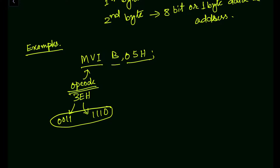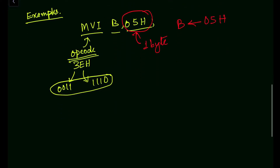The 'I' in MVI stands for immediate addressing mode — we will cover addressing modes in later videos. Whenever an instruction has 'I', it means the data is expressed directly in the instruction itself. Here, 05H is the immediate data that will be moved into register B. MVI is the opcode and 05H is the one-byte data — this is the two-byte instruction.